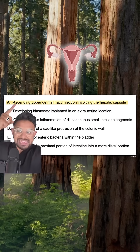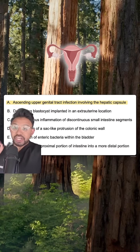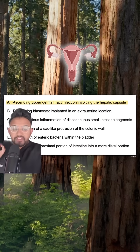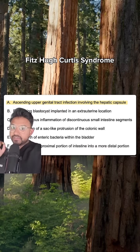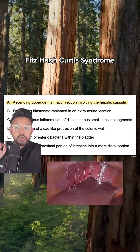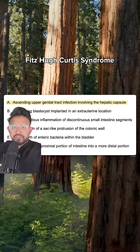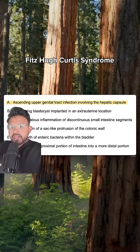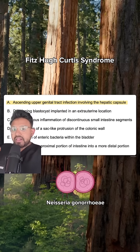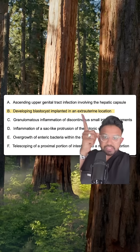Answer choice A: ascending upper genital tract infection involving the hepatic capsule. This relates to Fitzhugh-Curtis syndrome. Watch for a patient who has chronic PID — remember that pelvic inflammatory disease is going to be caused by Neisseria gonorrhea as well as chlamydia.